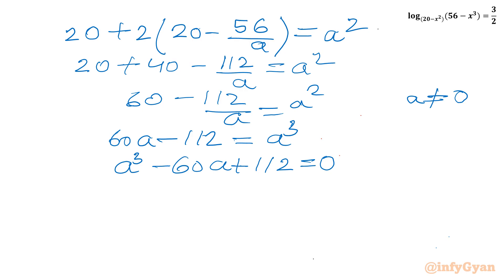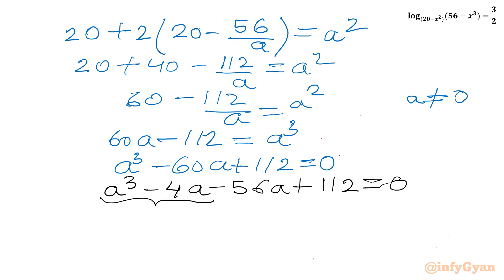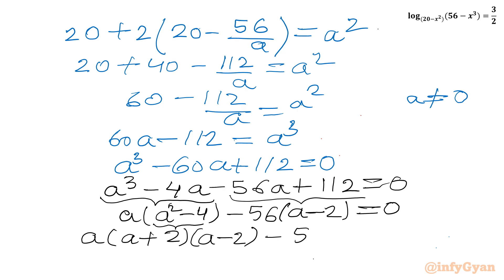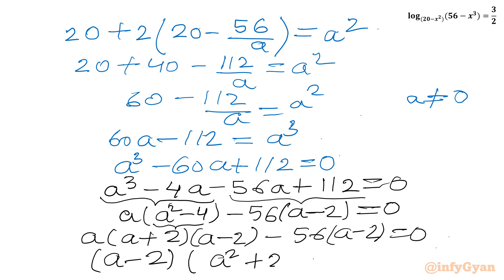This is a cubic equation. Using factorization, split -60a as -4a - 56a: a³ - 4a - 56a + 112 = 0. Factoring: a(a² - 4) - 56(a - 2) = 0. Applying difference of squares: a(a + 2)(a - 2) - 56(a - 2) = 0. Taking (a - 2) common: (a - 2)(a² + 2a - 56) = 0.